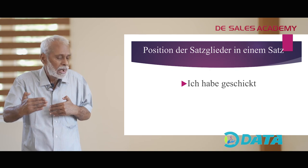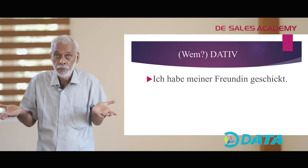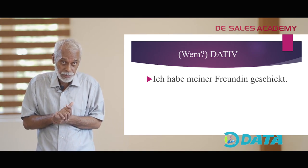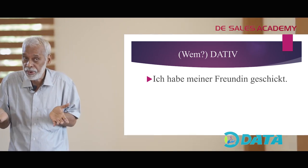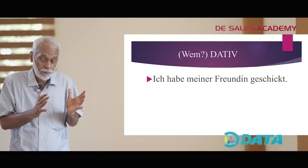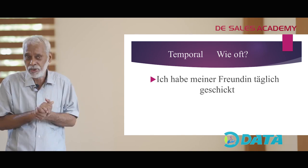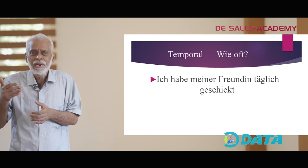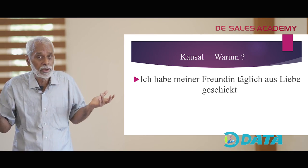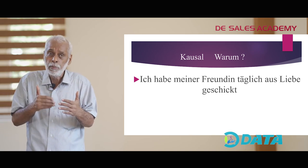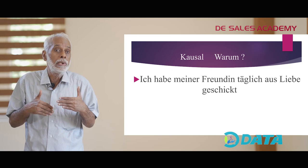All these things will come into a big sentence. Ich habe geschickt — das ist ein ganz einfacher Satz. Then comes the Dativ: Ich habe meiner Freundin geschickt — I have sent to my friend. Dativ — das ist sehr wichtig. Then comes the question wie oft — how often? Ich habe meiner Freundin täglich geschickt — täglich, jeden Tag.